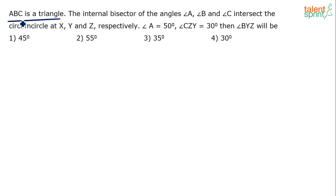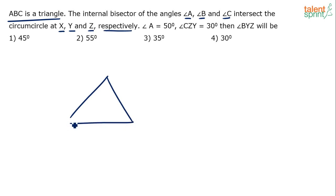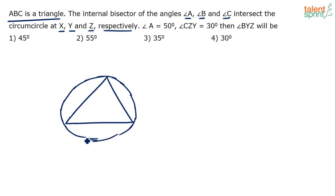So basically it says ABC is a triangle. The internal bisectors of angles A, B and C intersect the circumcircle — the circumcircle of triangle ABC — at the points X, Y and Z respectively. So let's draw the figure; I think it's all about getting the figure right. So let's say this is triangle ABC, and we are drawing a circumcircle to this triangle.